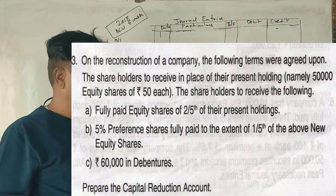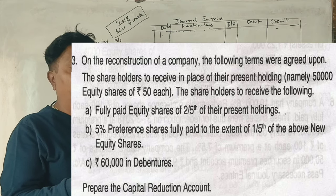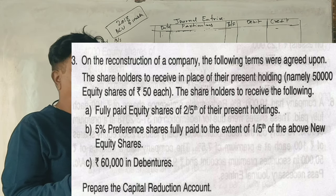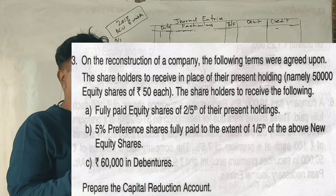On the reconstruction of a company, the following terms were agreed upon. The shareholders to receive, in place of their present holding, namely 50,000 equity shares of 50 rupees each.